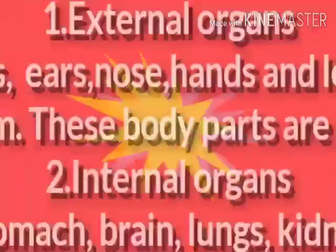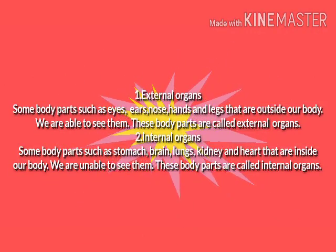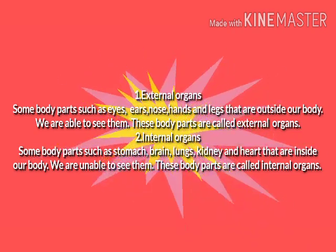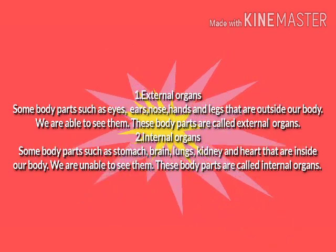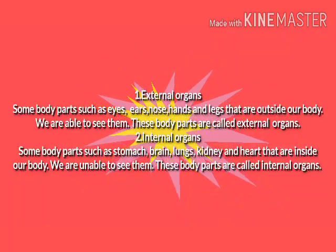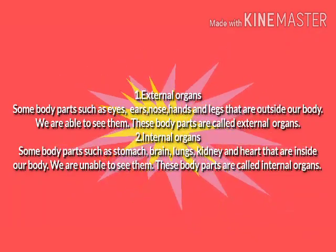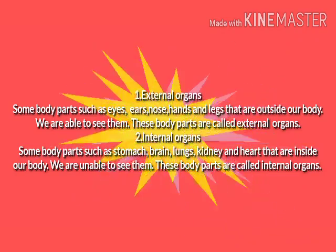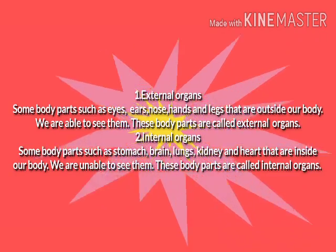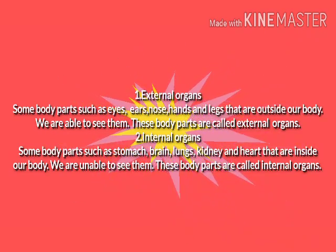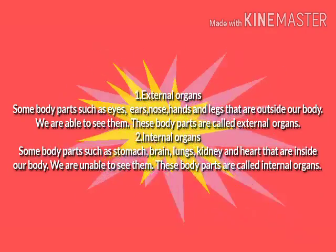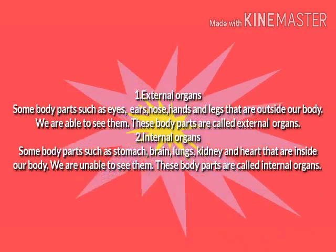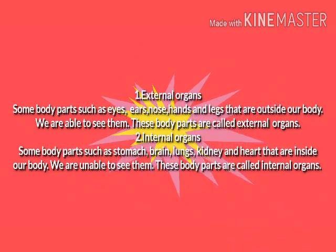First, define external organs. Some body parts such as eyes, ears, nose, hands and legs that are outside our body — we are able to see them. These body parts are called external organs.